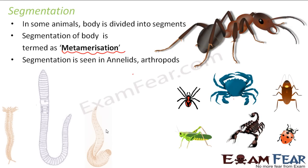We also see segmentation in arthropods, that is the insects, and they have different functions — in some it helps in feeding, in some it acts as a sense organ. In insects, these segments are grouped together to form different parts of the body, like the head, the abdomen, and the thorax. Looking at this insect, this portion is the head, this portion is the abdomen, and this portion is the thorax. A few segments — one, two, three, four — are grouped together forming the thorax, and some segments grouped together forming the abdomen. That is how the arrangement works in insects.